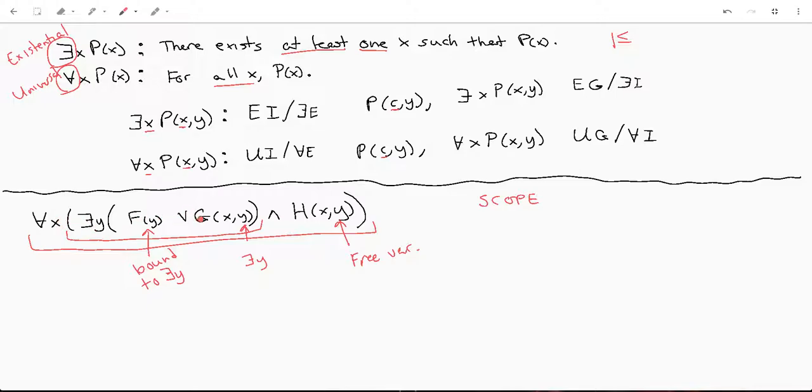However, all of these x's in here are within the scope of that universal. So all of these x's are bound to the universal quantifier. So that's kind of scope in a nutshell. It doesn't get too much more complicated than that.